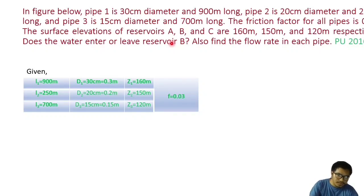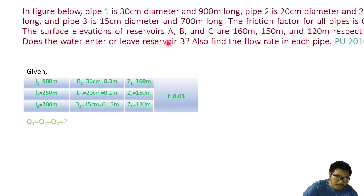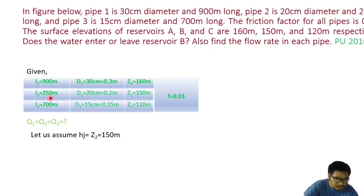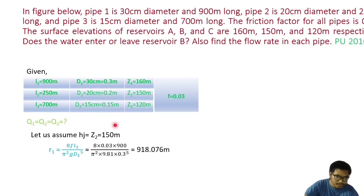We need to find the direction of discharge in pipe 2 (Q2) and find the flow rate Q1, Q2, and Q3 in all three pipes. In Type 3 problems, we assume the total head at junction J equals Z2, which is 150 meter initially.